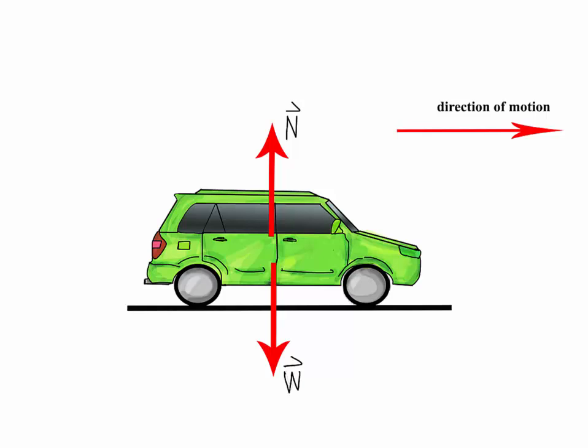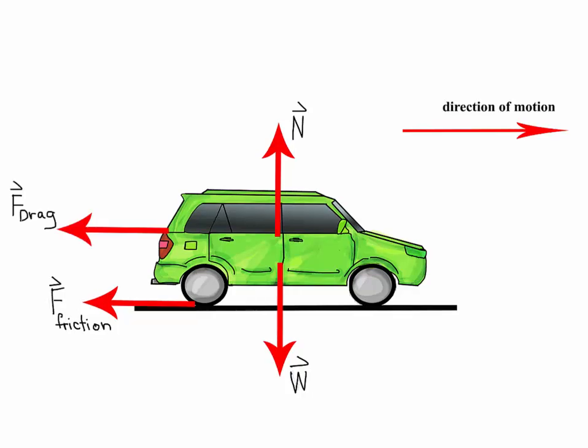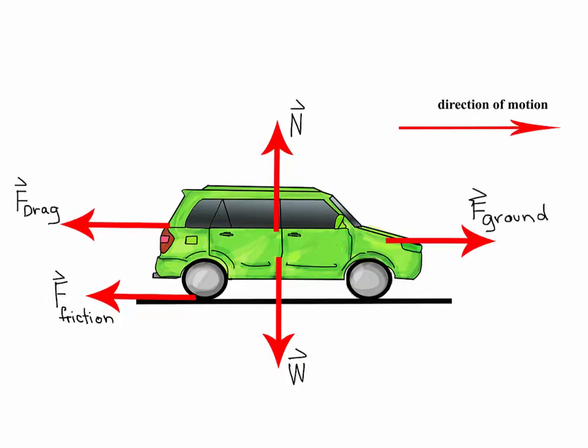For any problem, we need to first draw a free body diagram and define our forces. So here, we have the direction of motion, the normal force, and the weight. We have friction, the drag force, and we have F-ground, which is the propelling force by the ground. This is the propulsion force that the ground exerts on the tires.